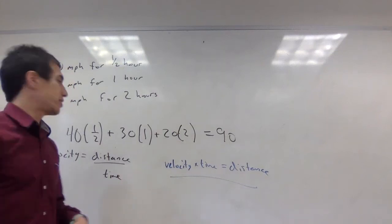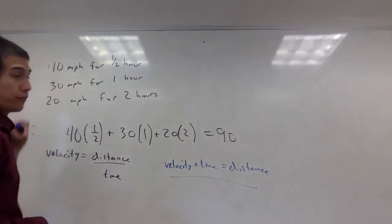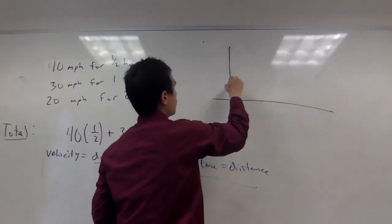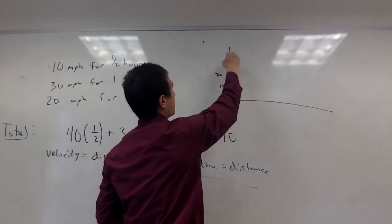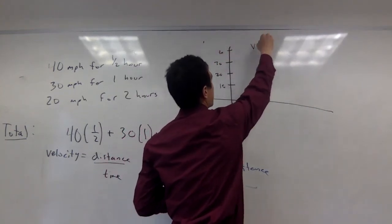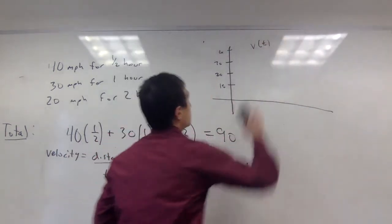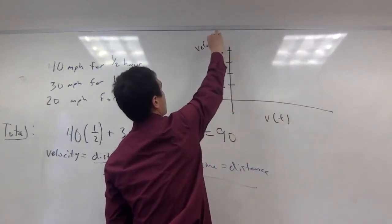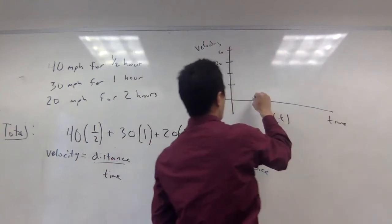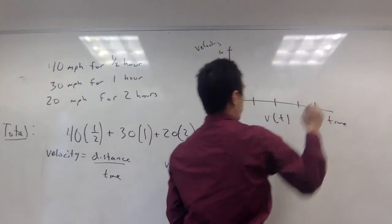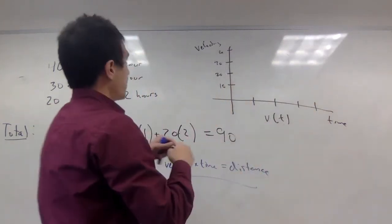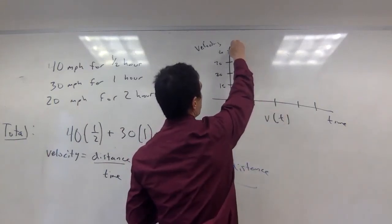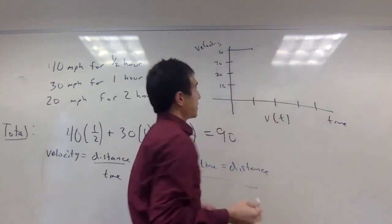What's the relationship to area? Let me graph our velocity on this trip. The scale goes 10, 20, 30, 40 — this is my velocity with respect to time. The vertical axis is velocity, the horizontal axis is time, going out to about four hours. In the first half hour I drove 40 miles per hour, so from time zero to time one half, my velocity was 40.